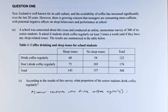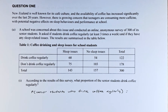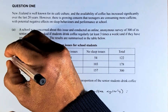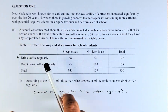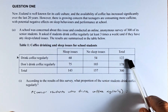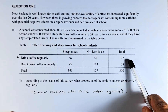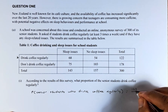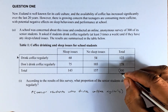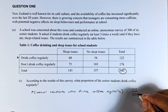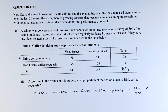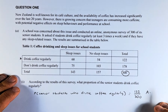According to the results of this survey, what proportion of the senior students drink coffee regularly? We look at the 'drink coffee regularly' row — altogether there are 122. So the proportion is 122 out of 300. That is a simple achievement in this paper.